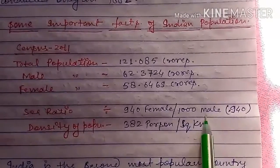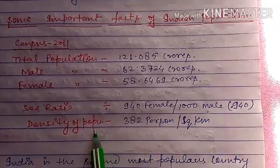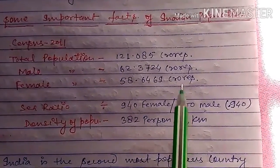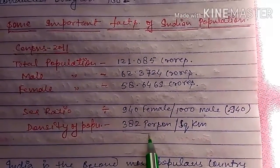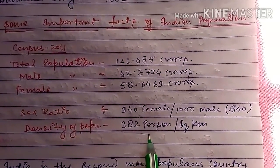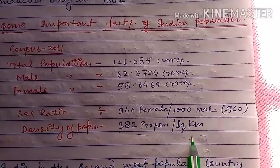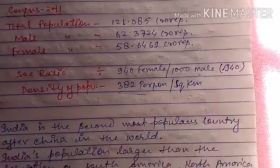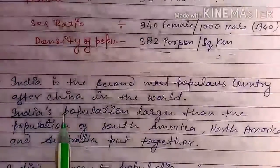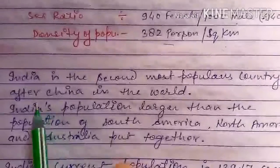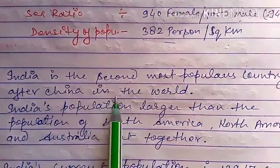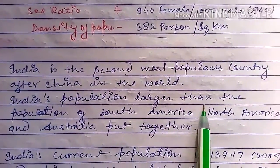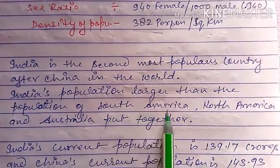According to the 2011 census, the population density of India is 382 persons per square kilometer. India is the second most populous country in the world after China.